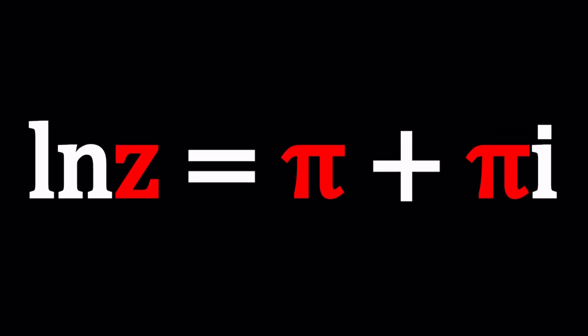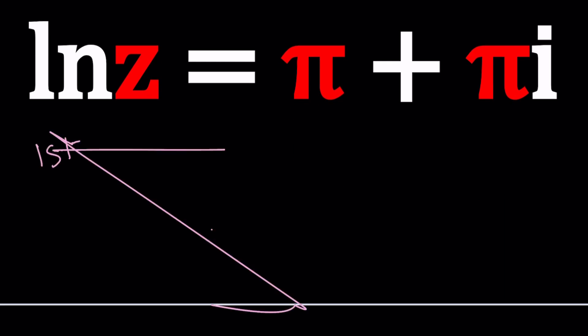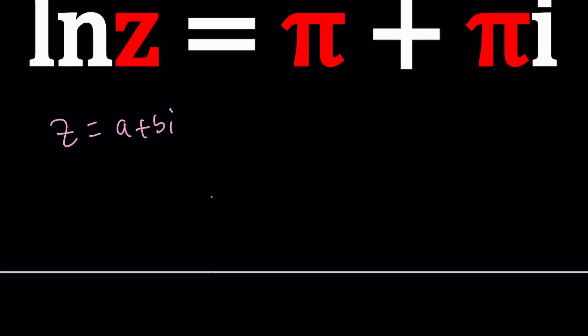So first method is going to do what is very typical for this channel and that is replacing Z with A plus B I. When you replace Z with A plus B I you're basically saying that Z is a complex number so let's write it as a complex number. So from here we get ln(a + bi) = π + πi.